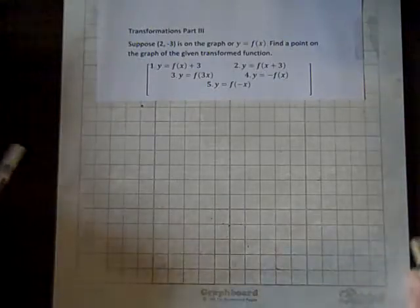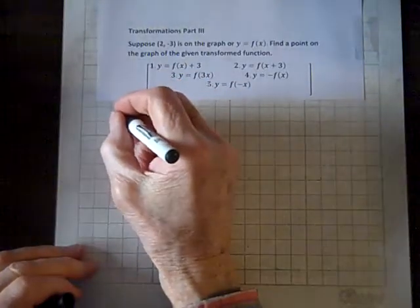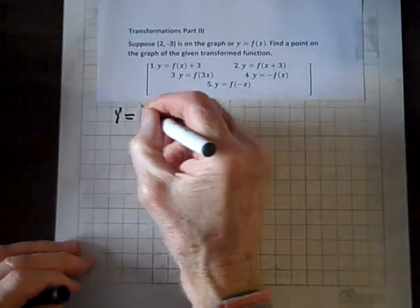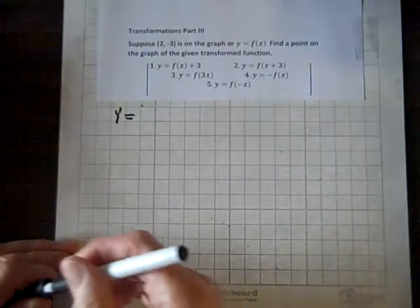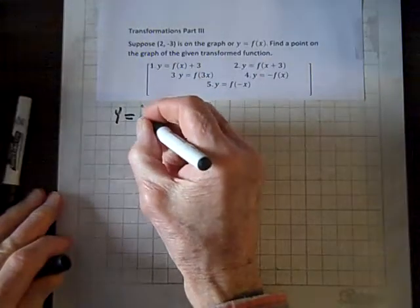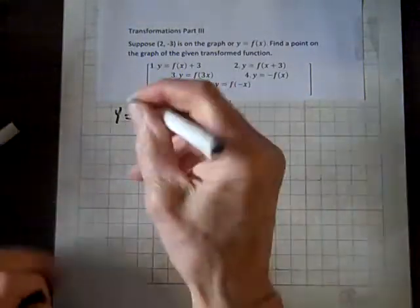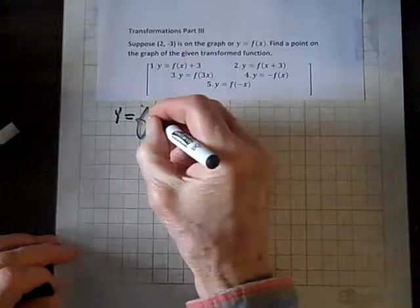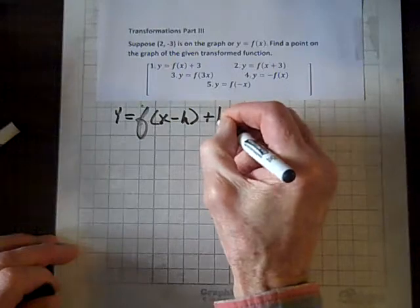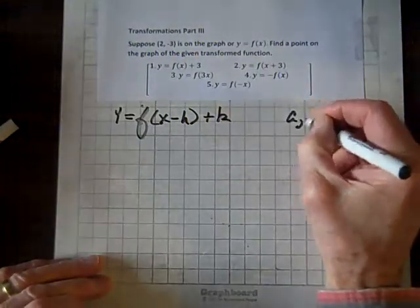Well, now we're going to deal with another aspect of transformations. So, you know this, if you have y equals... As a matter of fact, let's just get to a transformation. f of x minus h plus k. And say we're starting with this ordered pair a, b.